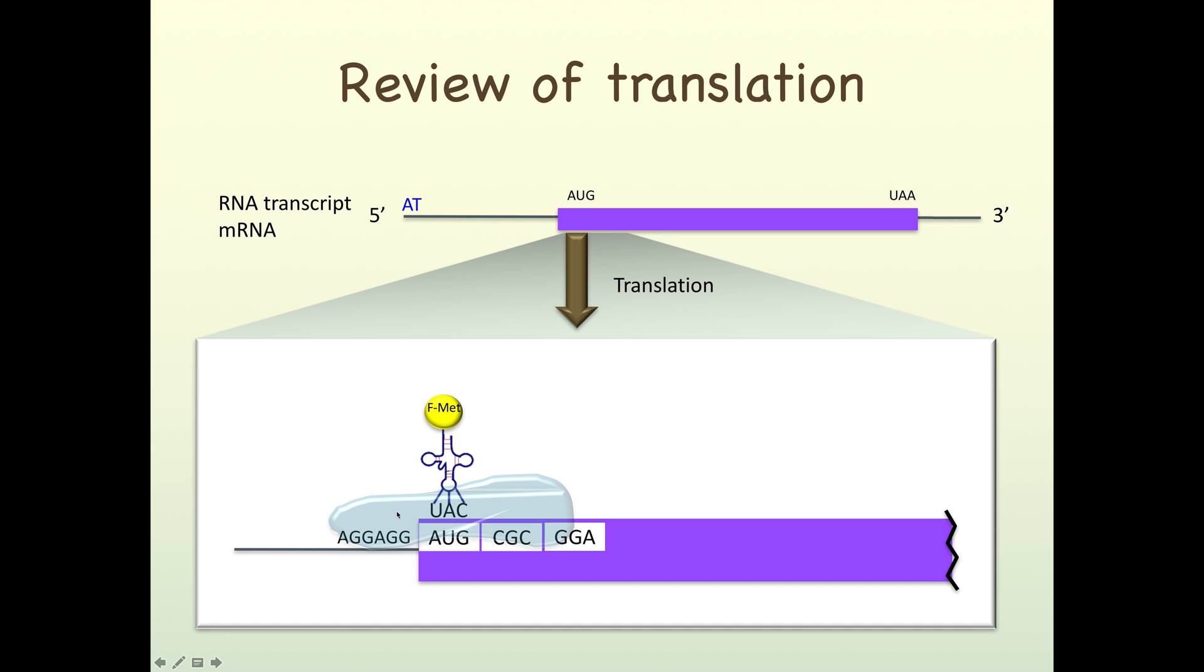With the 30S subunit comes a special initiator tRNA called F-methionine tRNA, and this is the tRNA that binds to the start codon. There are some other initiation factors that come into play here, but because it's not super relevant to predicting genes, we'll leave that to learn in BNB280.